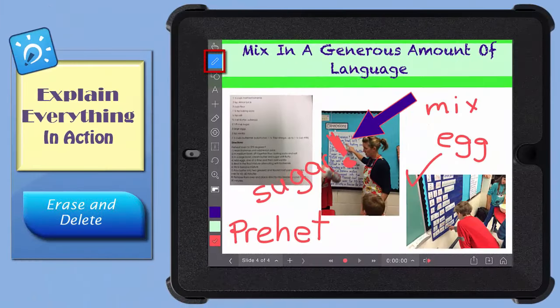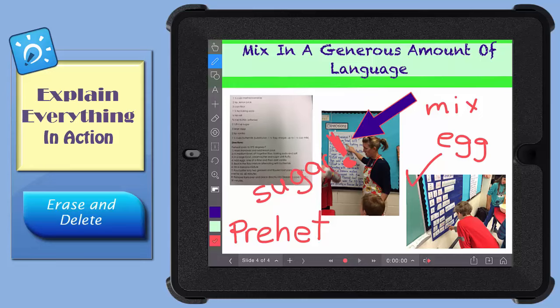You can remove marks you've made with the Draw tool while it's still active. Just tap the Erase tool down here and drag your finger over anything you want to erase.